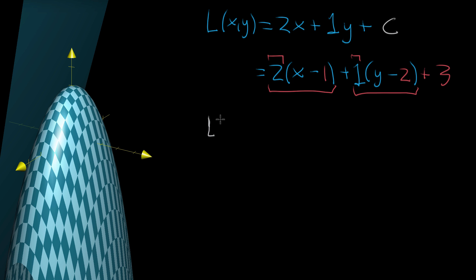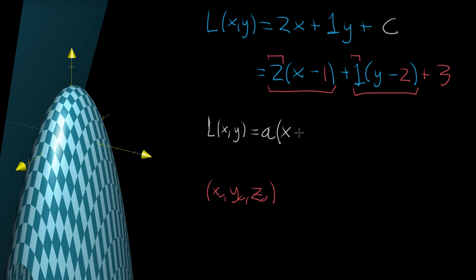If you want some kind of function which gives you a plane that passes through a certain point — let's say that point is (x₀, y₀, z₀), where these are just constant values — then the function takes the form: a times (x minus x₀), where x is the variable and x₀ is the constant, plus b times (y minus y₀), and then you add z₀ to all of that.